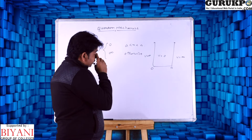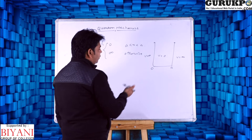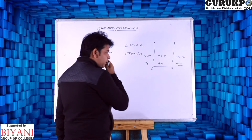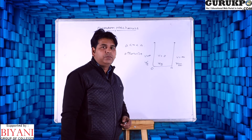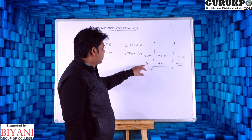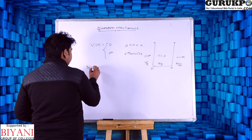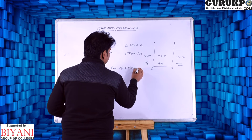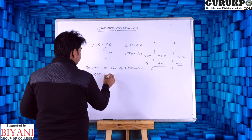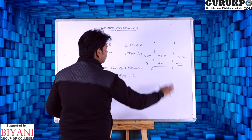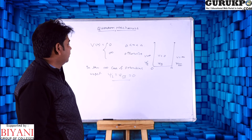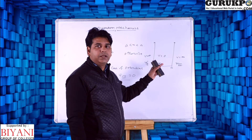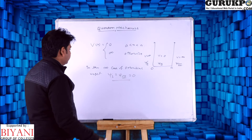In the infinite potential case, we find the wave function in three regions, represented as psi 1, psi 2, and psi 3. In the case of infinite potential, we cannot obtain any wave function. So in the infinite potential regions, psi 1 and psi 3 equal 0. In region 2, however, we obtain the wave function and apply the Schrödinger equation to find everything we want.